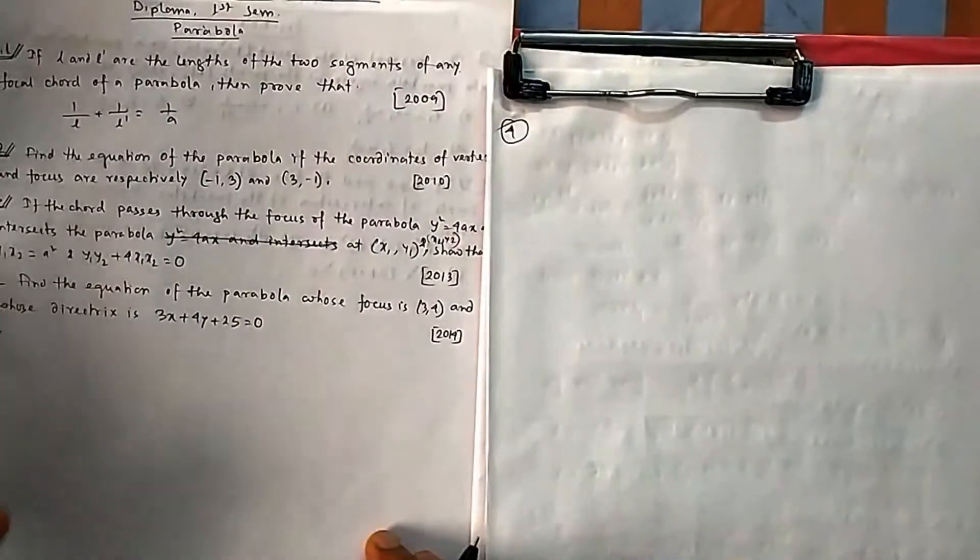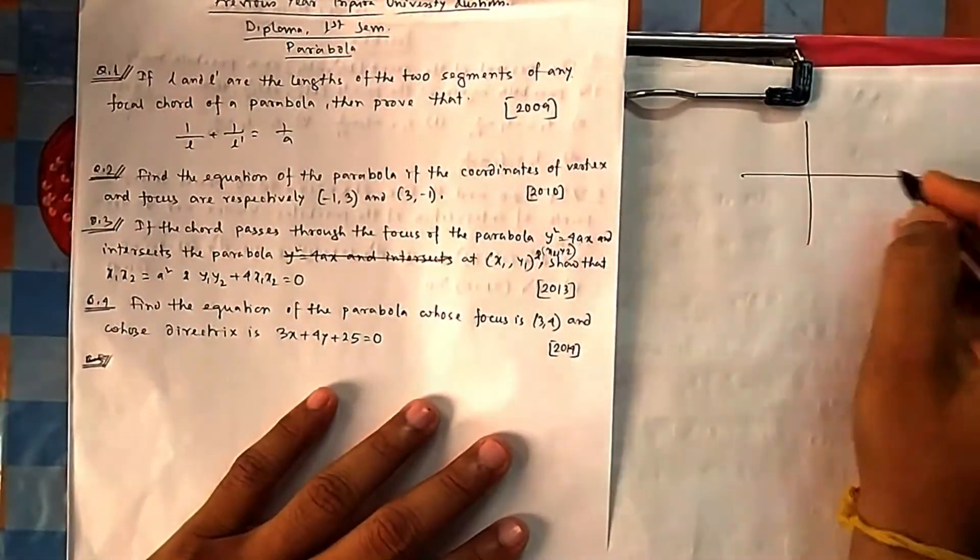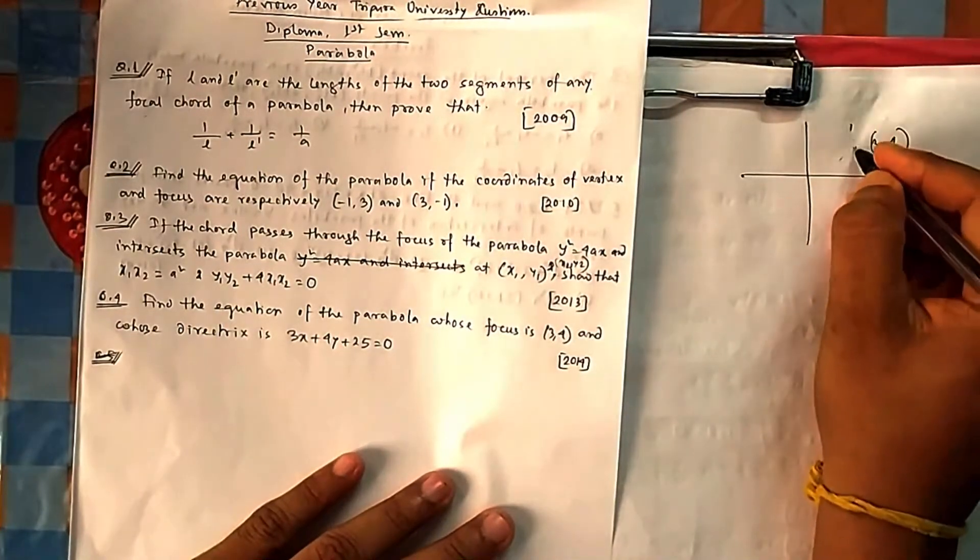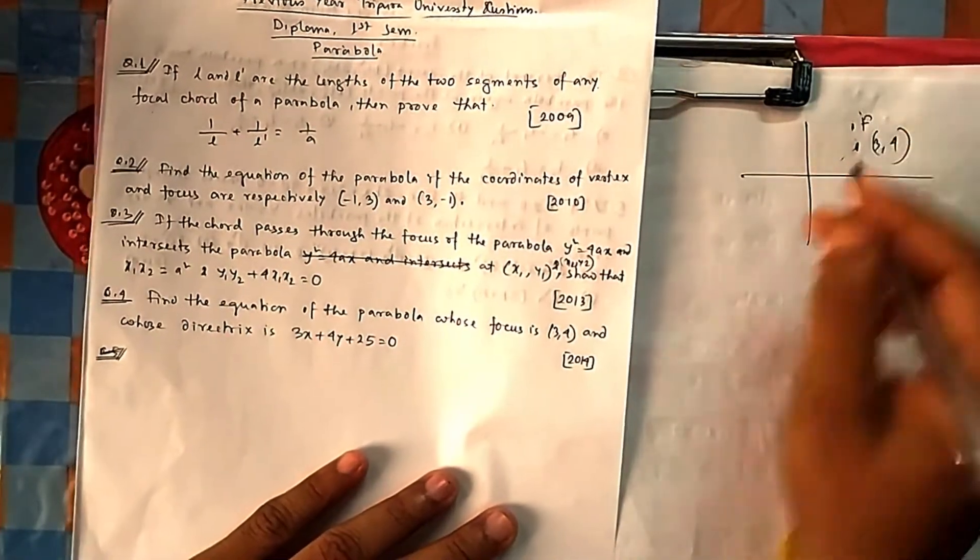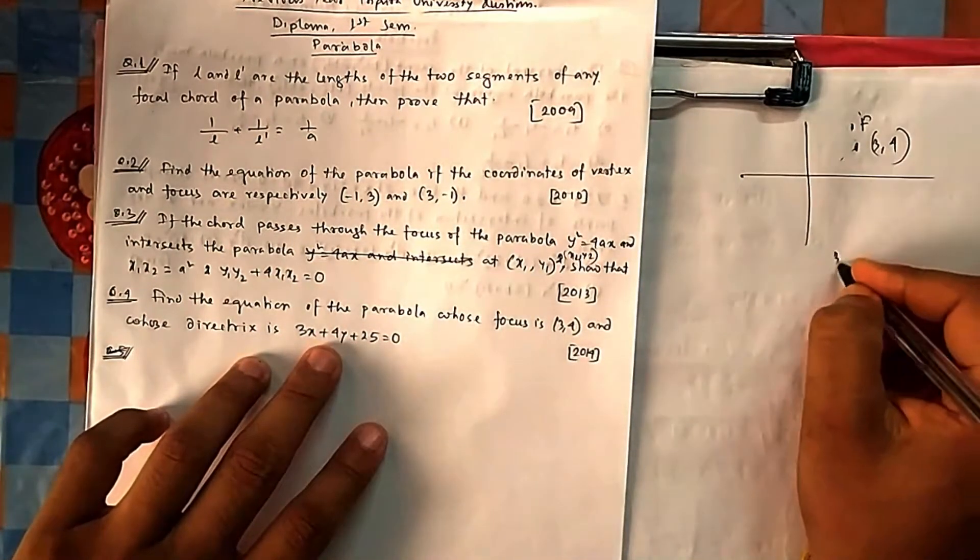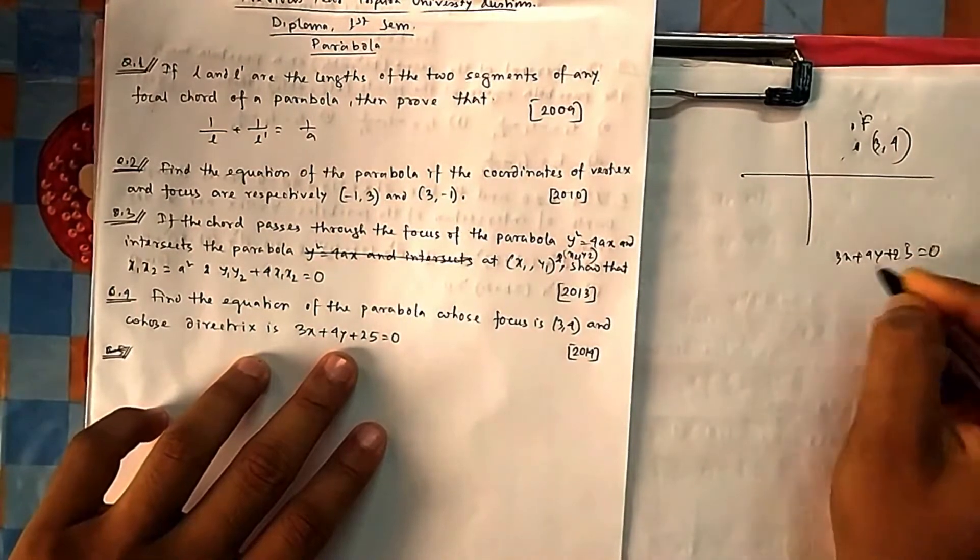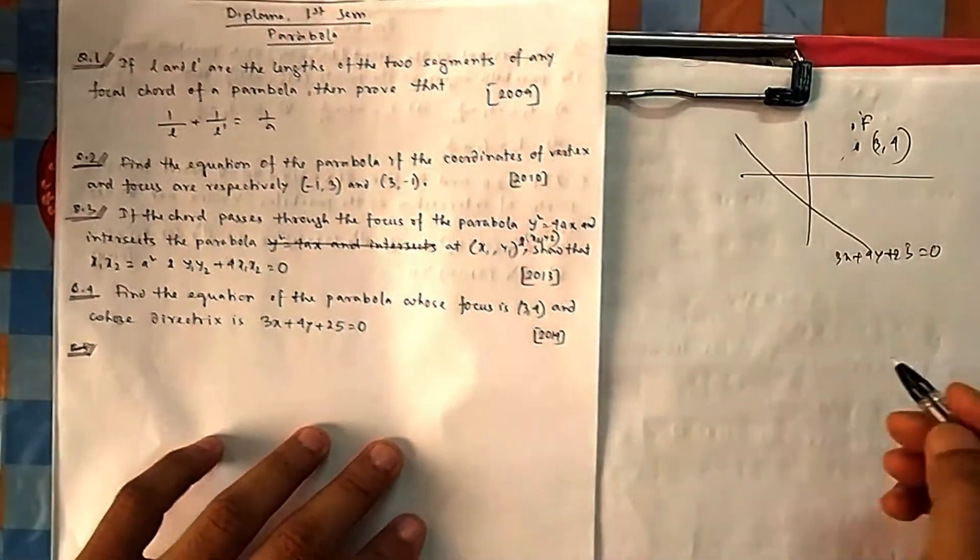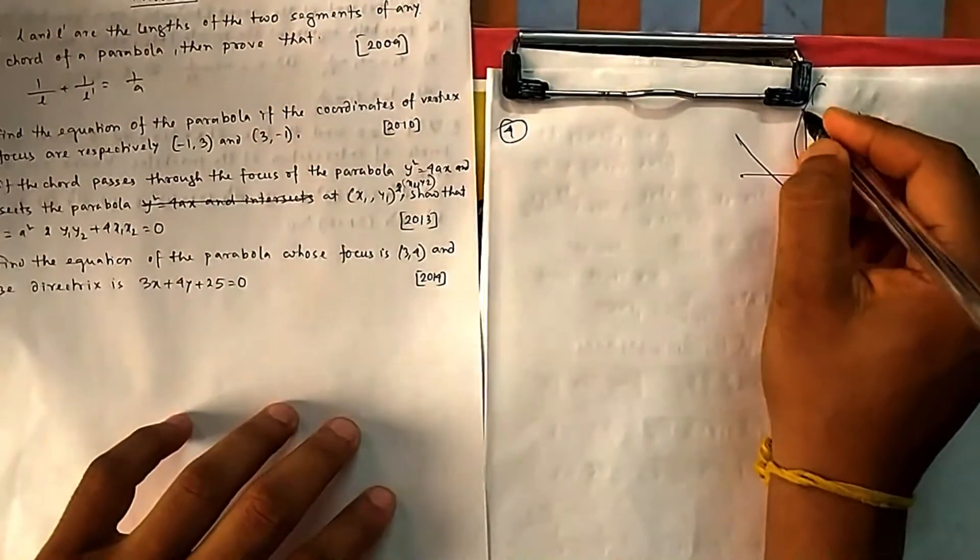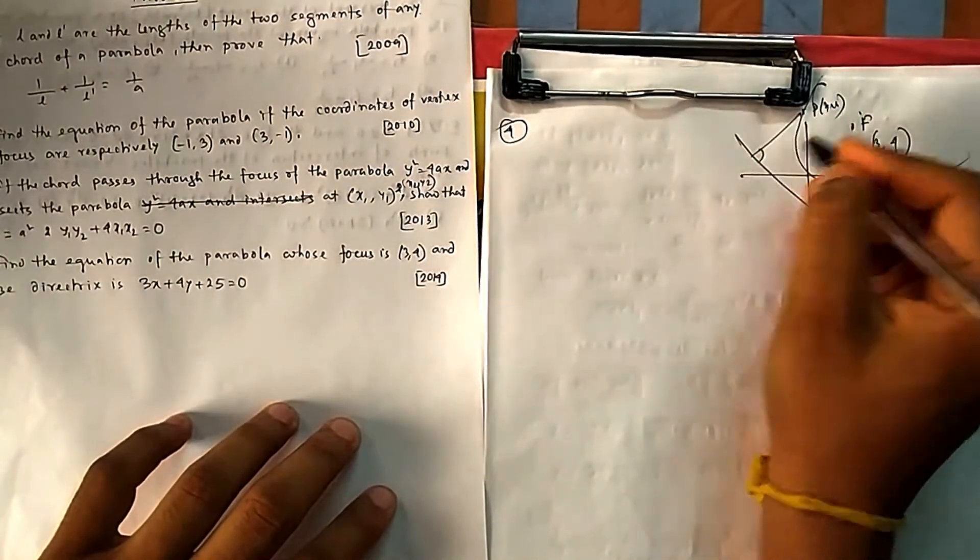Now if you come to question number 4: find the equation of the parabola whose focus is given. So they have given you a focus which is (3, 4) - let it be (3, 4) focus - and a directrix which is 3x + 4y + 25 = 0. So if you draw it, both will be negative, something of this fashion. Directrix is here, so something sort of this type of parabola it will come. Because P is (x, y), so they have given both. This length and this length are equal.